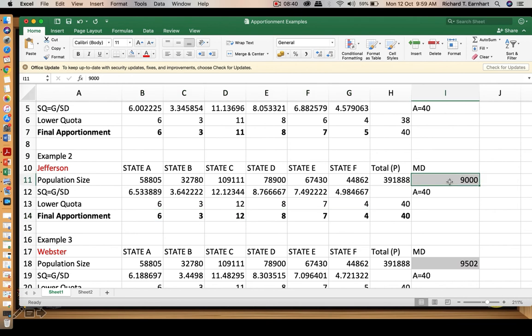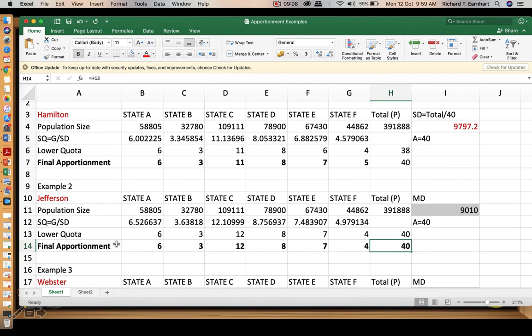You can also use 9,010, for as long as the total lower quota would be 40. This will be your final apportionment. As you can see, we have a different apportionment using Jefferson.